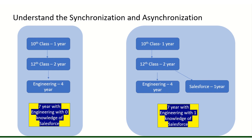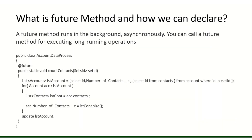So Student B finishes with seven years of engineering plus one year of Salesforce knowledge. The second student is definitely better because he completed the Salesforce course in parallel while doing engineering — that is asynchronization. The first student, after completing four years of engineering, will start Salesforce for one year sequentially — that is synchronization, doing every task one by one.